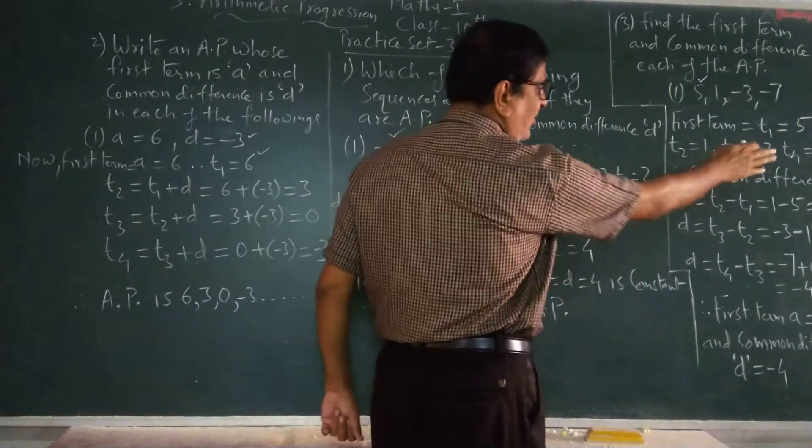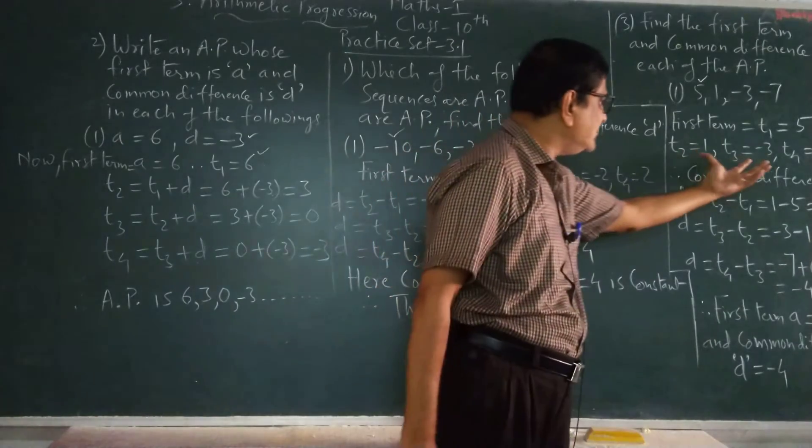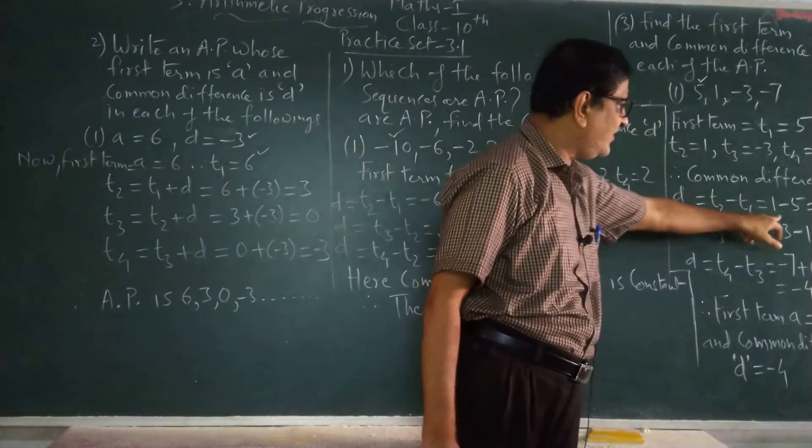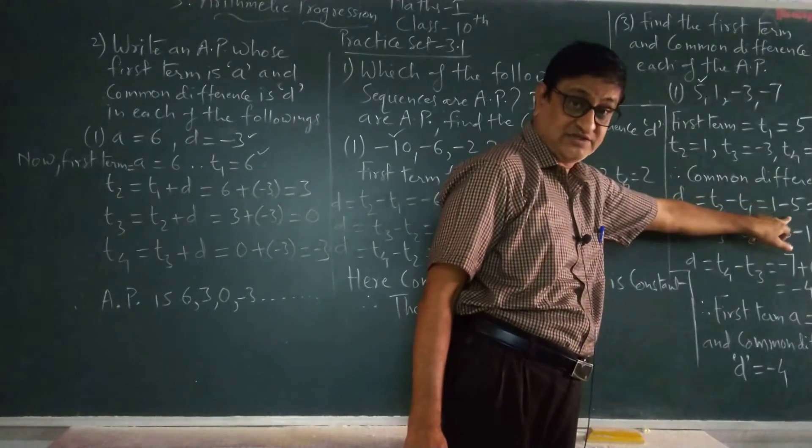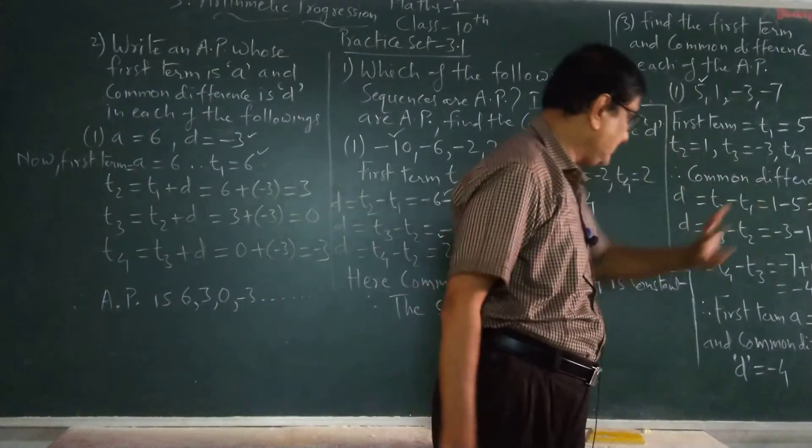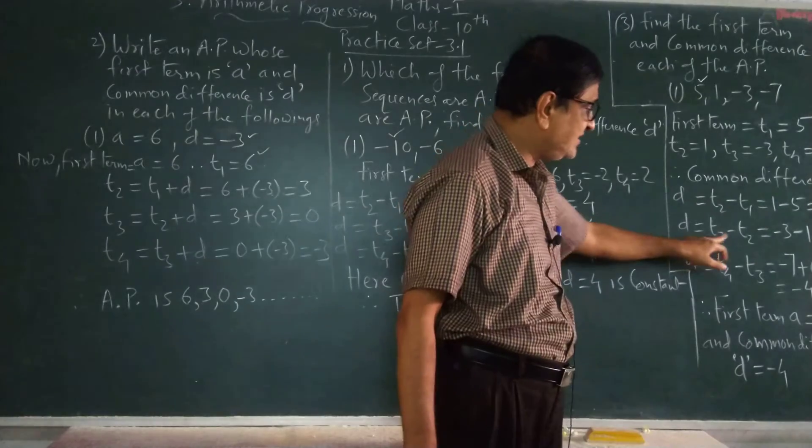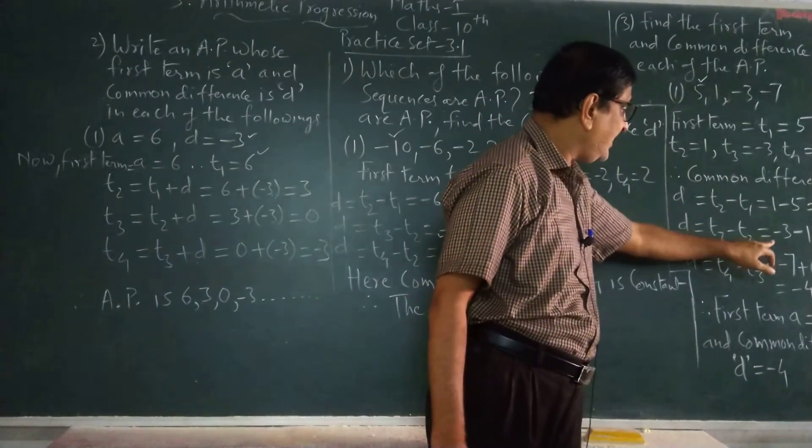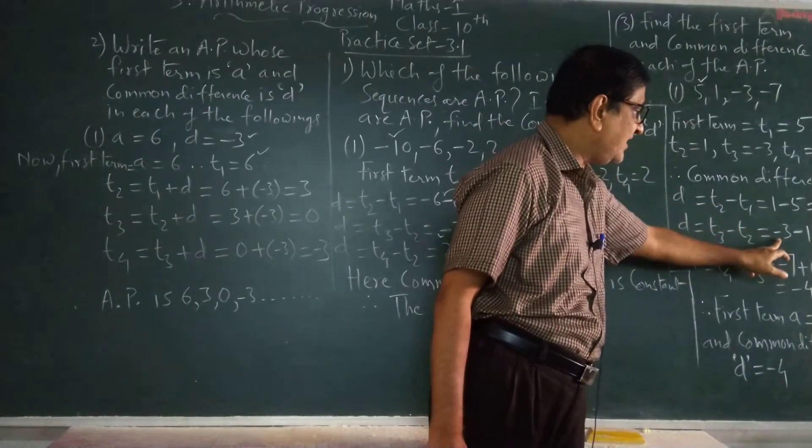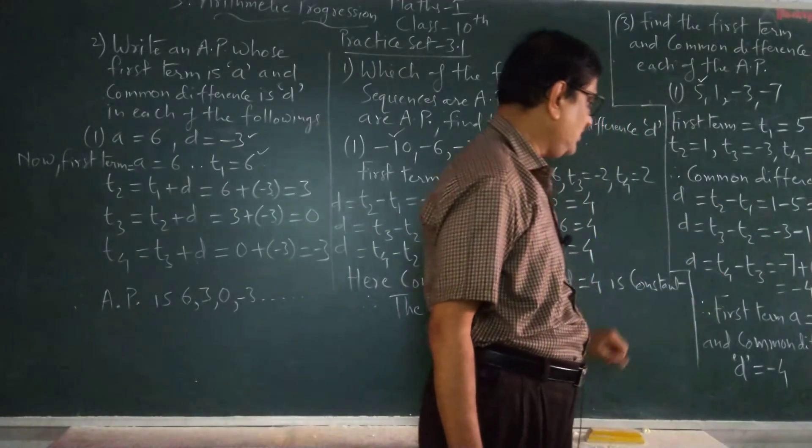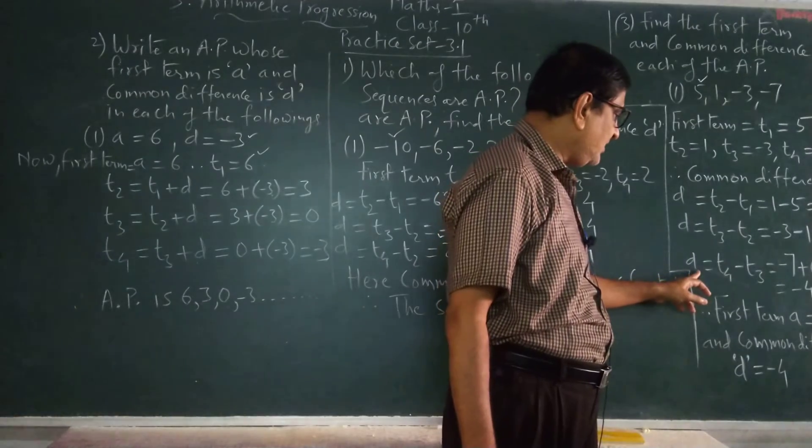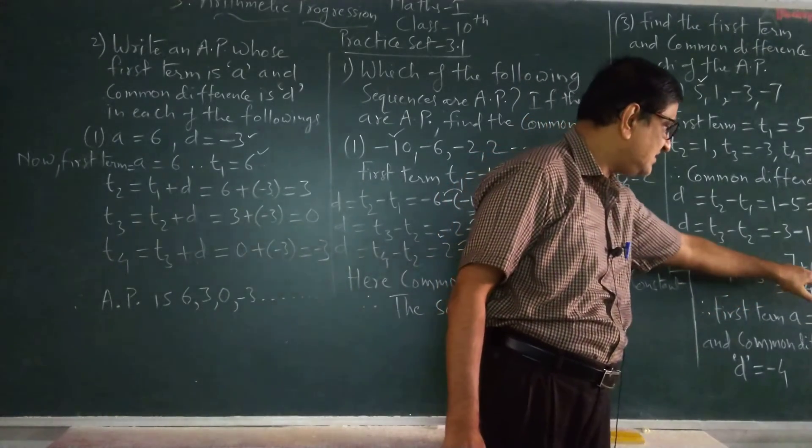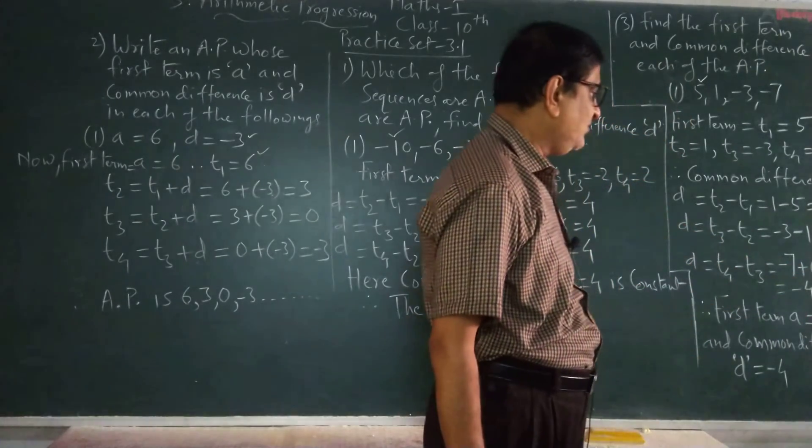The common difference, the difference between the two terms. First T2 minus T1, 1 minus 5, is equal to minus 4. Second, T3 minus T2, minus 3 minus 1, minus 4. So now T4 minus T3, minus 7 minus minus 3, minus 4.